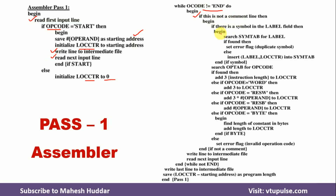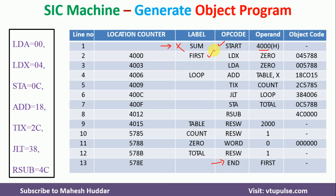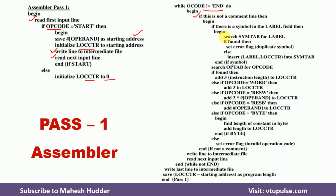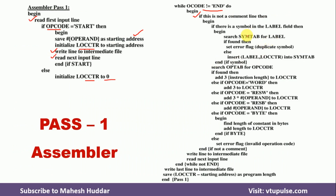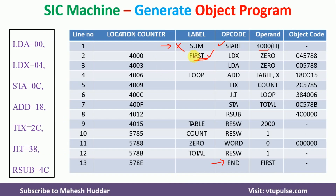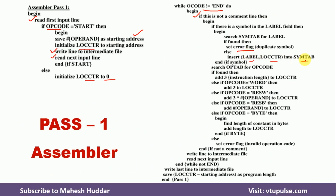If it is not a comment line, we check whether there is a symbol in the label field. For example, the label here is FIRST. We search the SYMTAB data structure for this particular label. Initially, the symbol table contains nothing, so FIRST will not be present. If it is found, we generate an error indicating it is a duplicate. If it is not present, the label and the location counter value are added to the symbol table — so label FIRST with location 4000 is added.